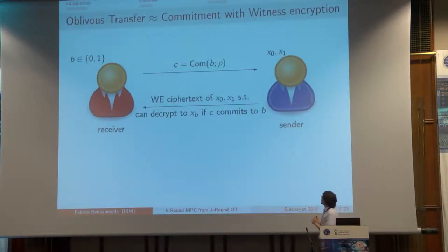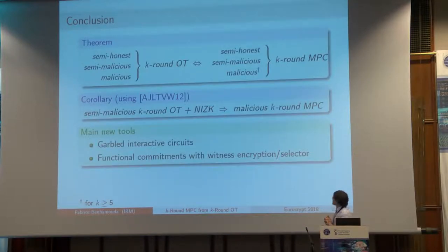We show that we can construct all of this just from OT. It's not that surprising because oblivious transfer already enables functional encryption. You can see the sender and receiver as doing witness encryption of X0 and X1, where the receiver will be able to get Xb. We essentially show that functional commitments can be constructed from OT, and for that we introduce tools from garbled circuits combined with various techniques.